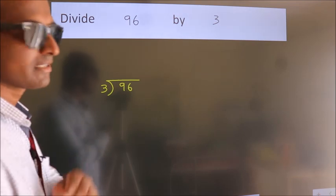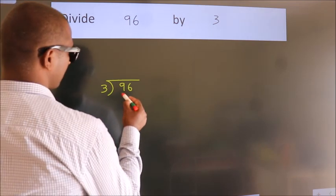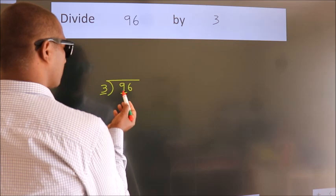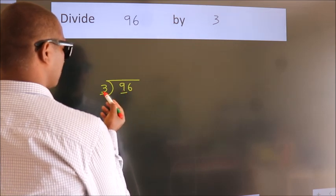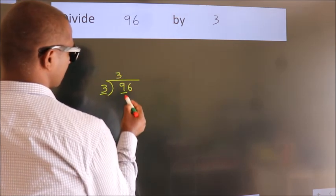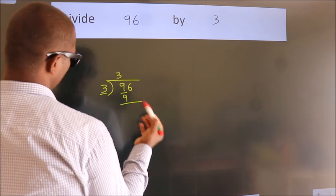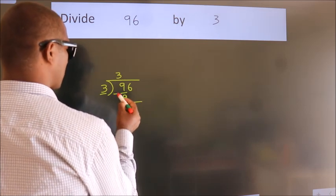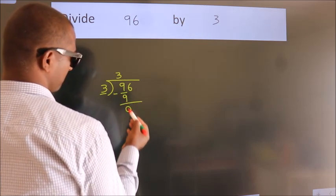Next, here we have 9, here 3. When do we get 9? In 3 table: 3 threes, 9. Now we should subtract. We get 0.